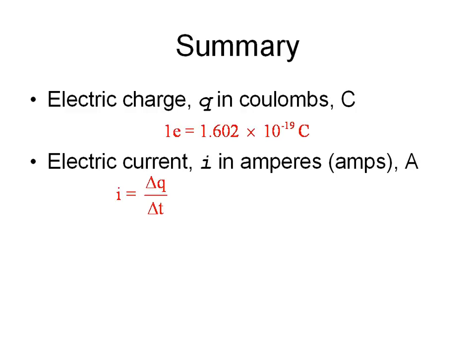And we abbreviate Amps with the uppercase letter A. Current is the measure of the amount of charge that flows by per second. One Amp is 1 Coulomb per second.